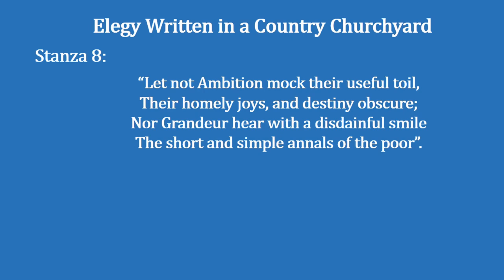'Let not ambition mock their useful toil, their homely joys and destiny obscure, nor grandeur hear with a disdainful smile the short and simple annals of the poor.' In this stanza he says we should not neglect their toil or their hard work, and no rich or wealthy person should mock over their hard work. It is the annals of the poor — the history of the poor — and this history is as significant as the history of wealthy or powerful men. There is a great divide between poor and rich in this poem, and this is a major theme.